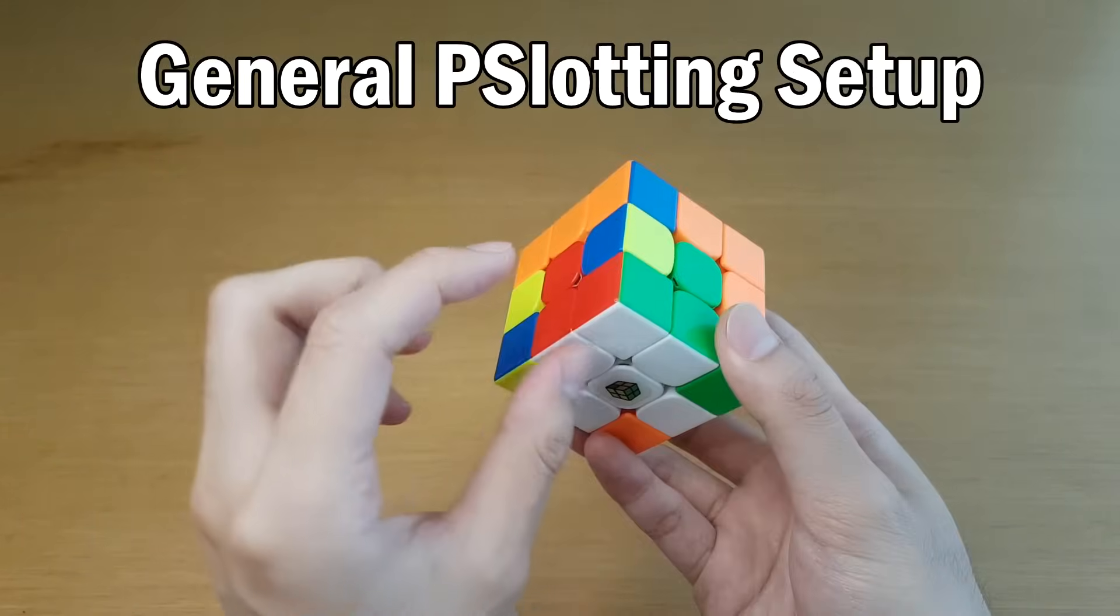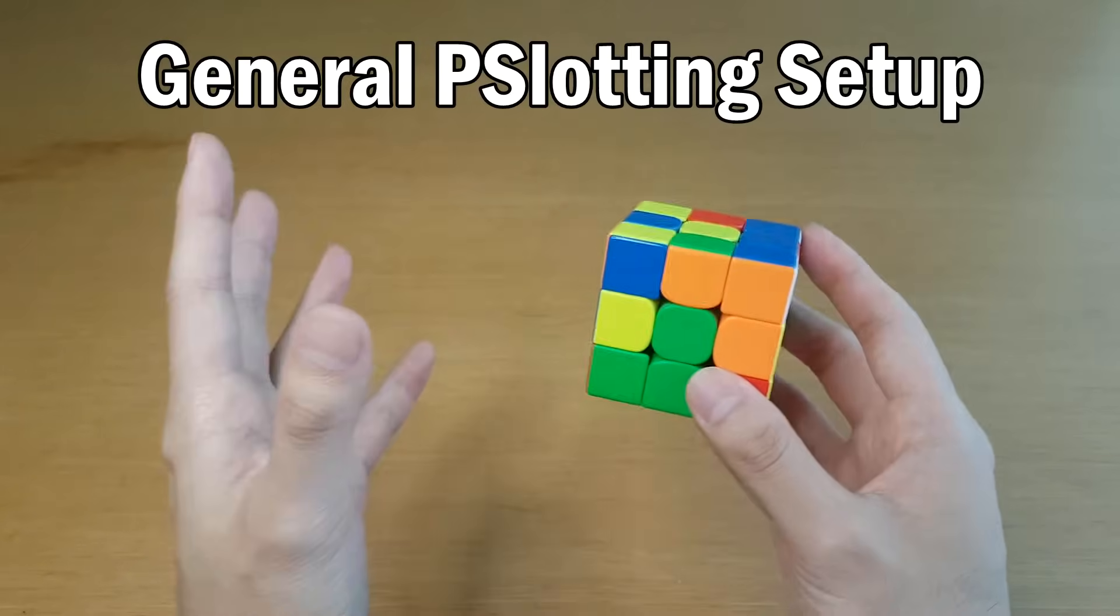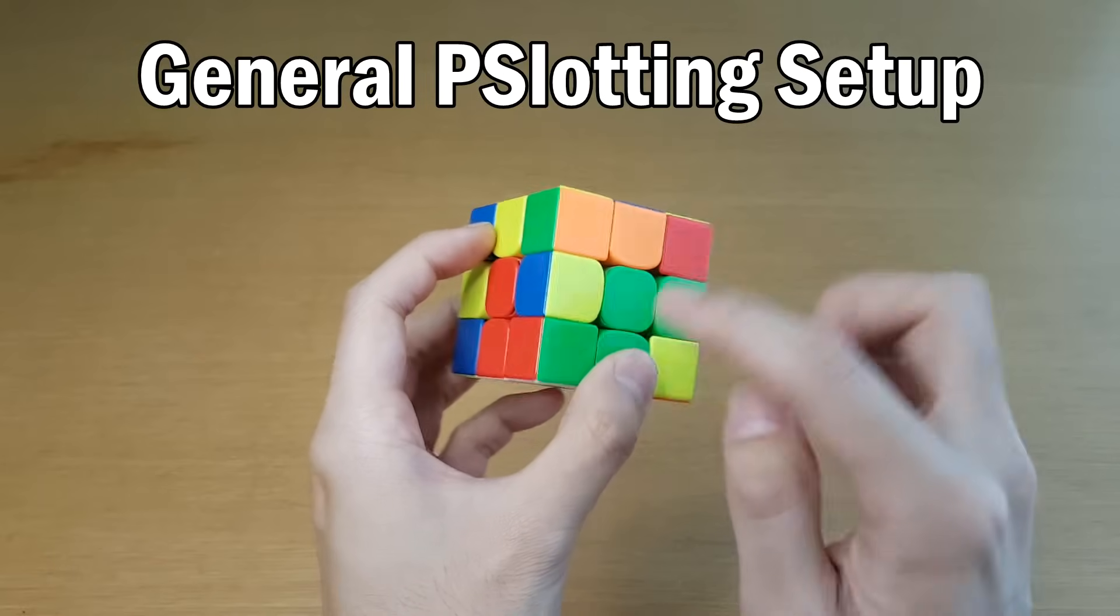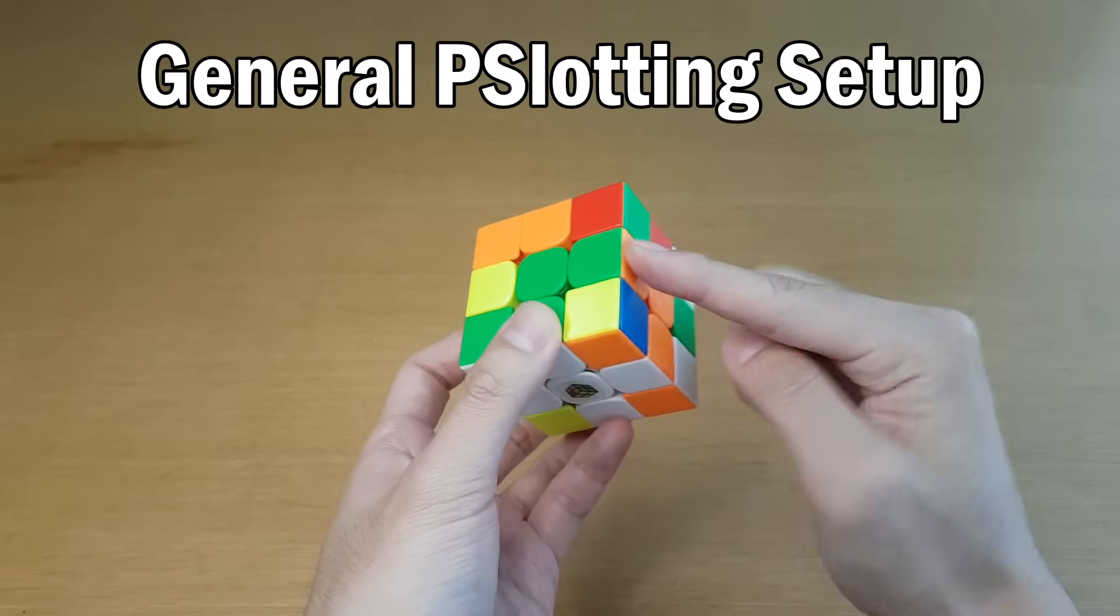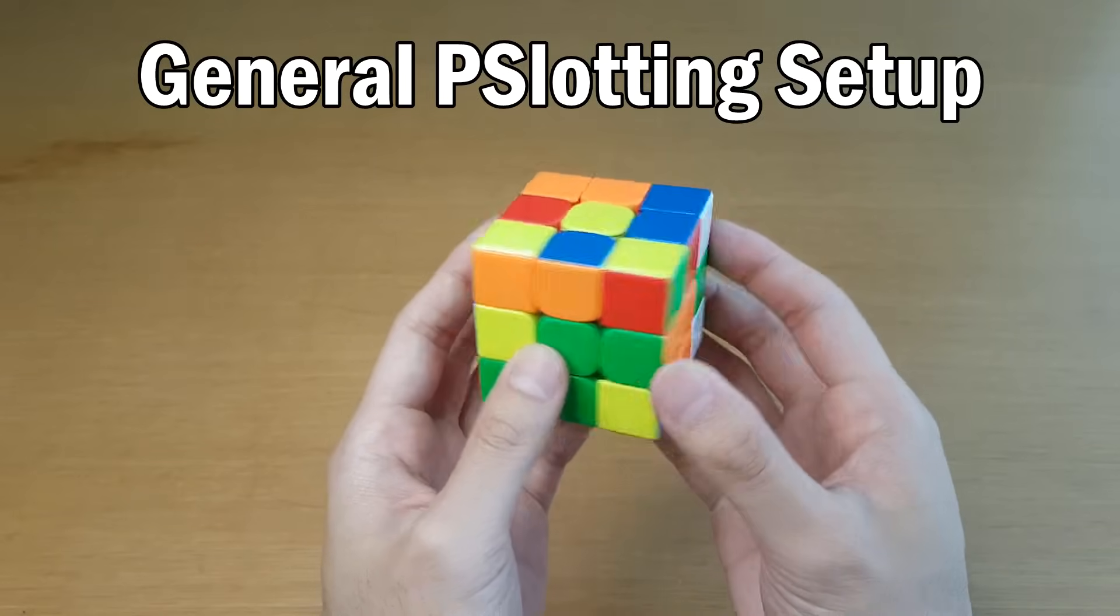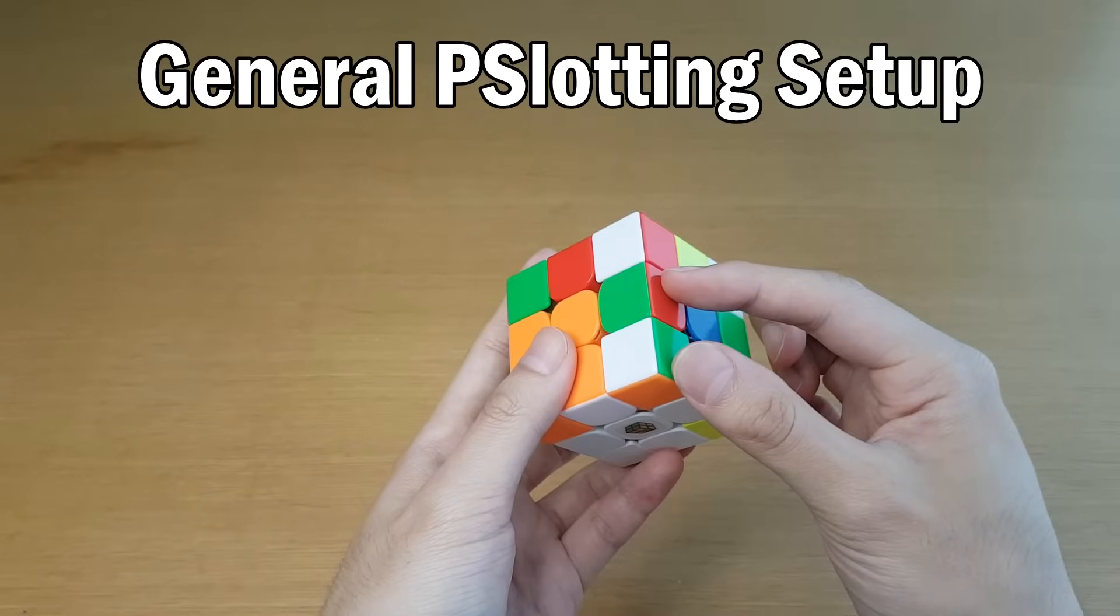And just remember that any time you see a corner or an edge solved anywhere, you can force a pseudoslot by solving a different piece like this corner with this edge. Then you just need to solve this corner with this edge. Just make sure your recognition is good enough that it's not terrible cases like this.